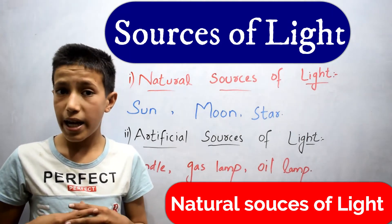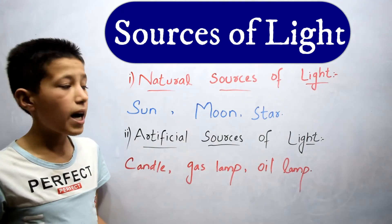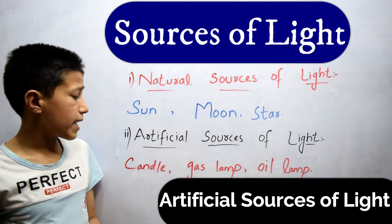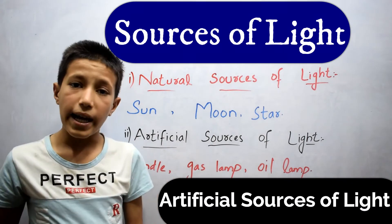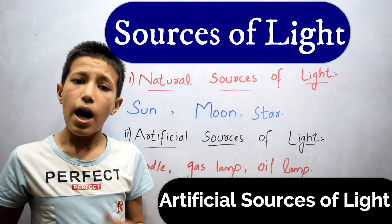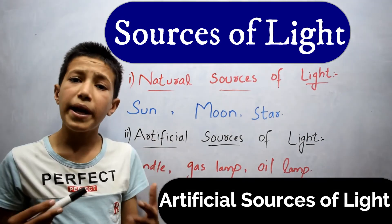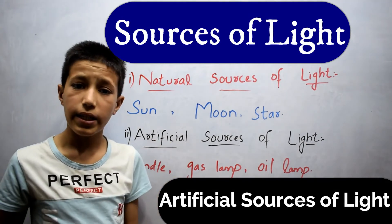They are striking points in the sky. The second category is artificial sources of light. Artificial source means a man-made source of light.